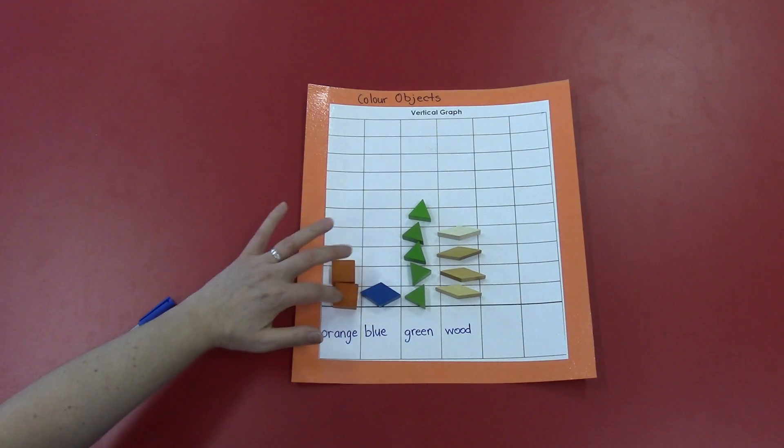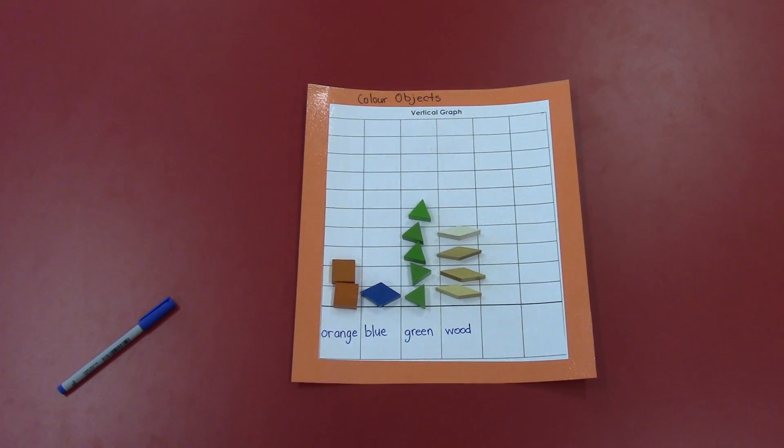Five plus four is nine, ten, eleven, twelve. There are twelve objects in all. I can tell that there are one more green than wood, and one more orange than blue. So those are some of the things that I can see for my graph.